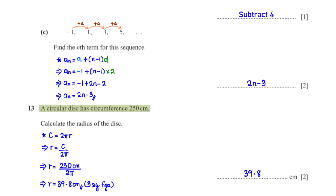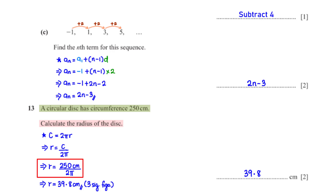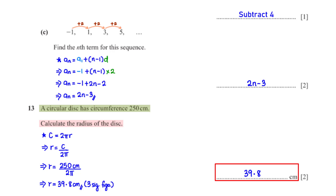A circular disk has circumference 250 centimeters. Calculate the radius of the disk. This is the formula for the circumference of a circle. We want to find the radius, so we make R the subject. The circumference C has been given as 250 centimeters. When we type this into the calculator, we get 39.8 centimeters rounded to 3 significant figures.